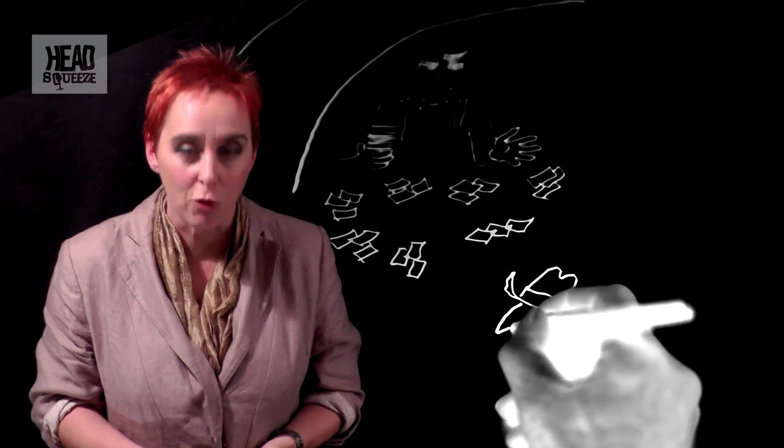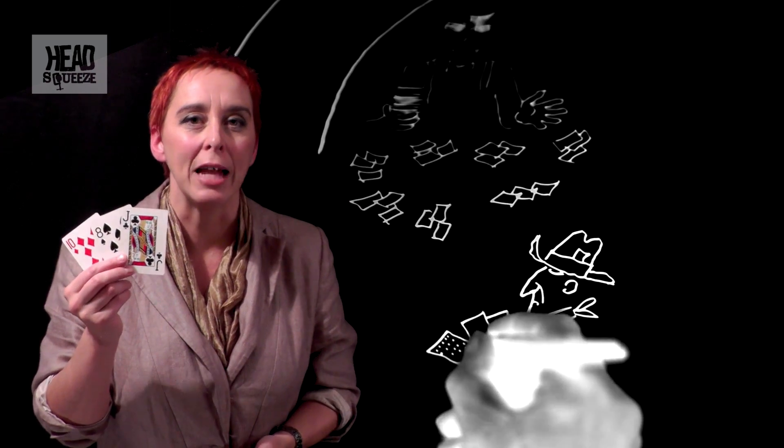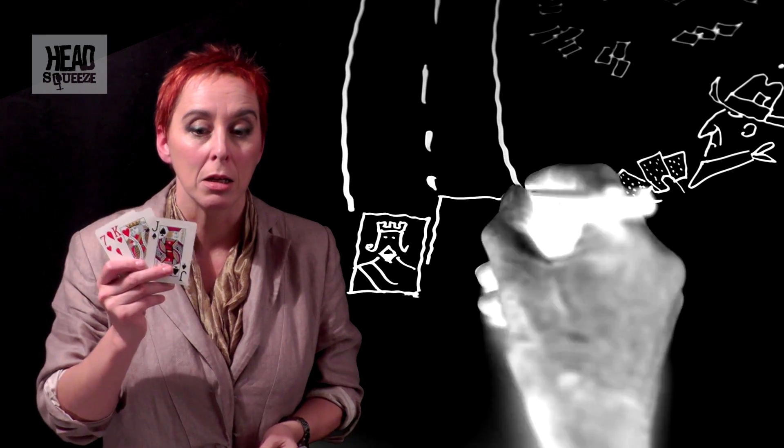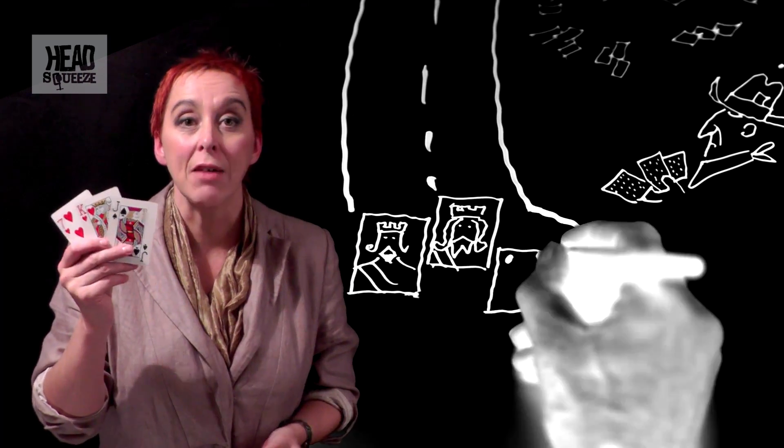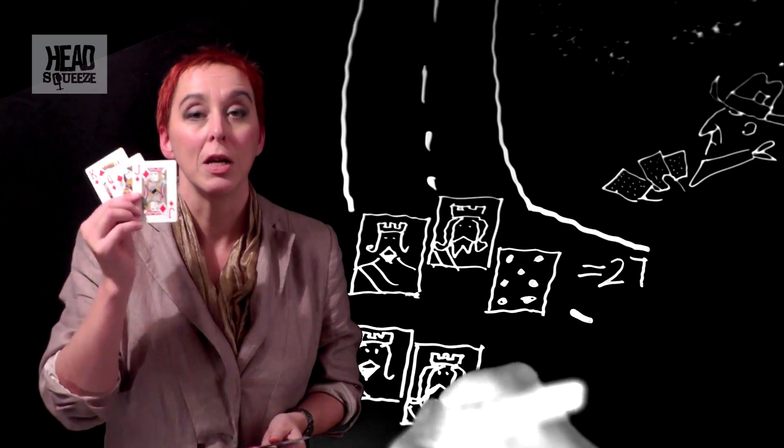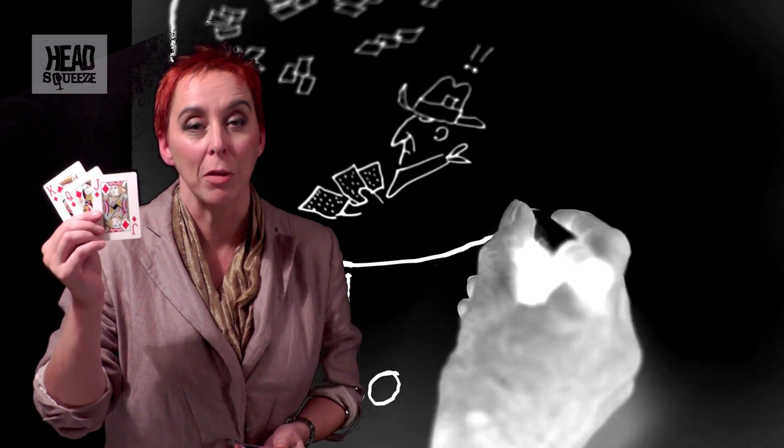For example, a jack, an 8, and a 10 giving you a value of 28 - that's much more than the average. Or say a jack, a king, and a 7 - 27, again much higher than average. Or jack, king, queen giving a score of 30. That's the highest you can get from a three card hand unless you go aces high.